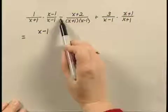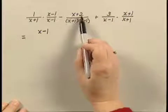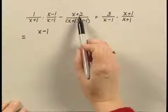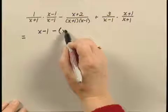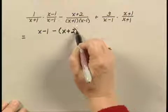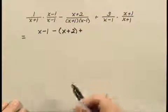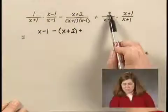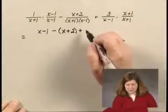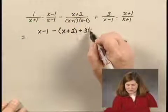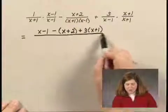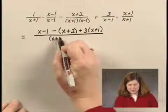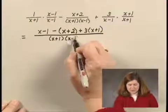Now I subtract the numerator x plus 2. Be careful whenever you subtract to use parentheses. This is minus, using parentheses, the quantity x plus 2 plus, and now I multiply 3 times x plus 1, and that is all over the common denominator x plus 1 times x minus 1.